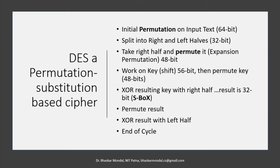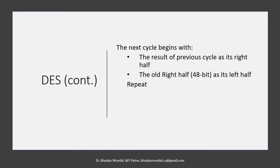There is an XOR operation — the resulting key is XORed with the right half, and the result goes to 32-bit S-boxes. After the S-boxes, there is another permutation phase, and the result of that permutation goes through an XOR operation with the left 32-bit half. At the end of the first cycle, it goes to the next cycle. The next cycle begins with the result of the previous cycle as its right half, and the old right half as its left half. This keeps repeating for all 16 rounds.